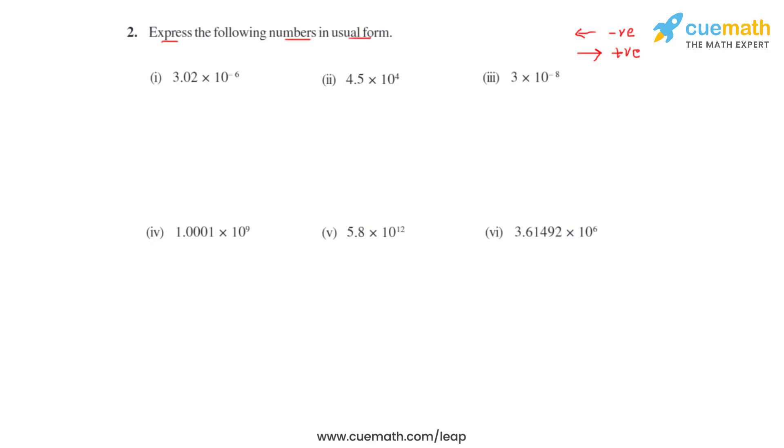We'll start with the first bit. We have 3.02 times 10 raised to negative 6, so the decimal which is between 3 and 0 must move 6 places towards left. So we get the answer as 0.0000302, and this is the usual form of the given number.